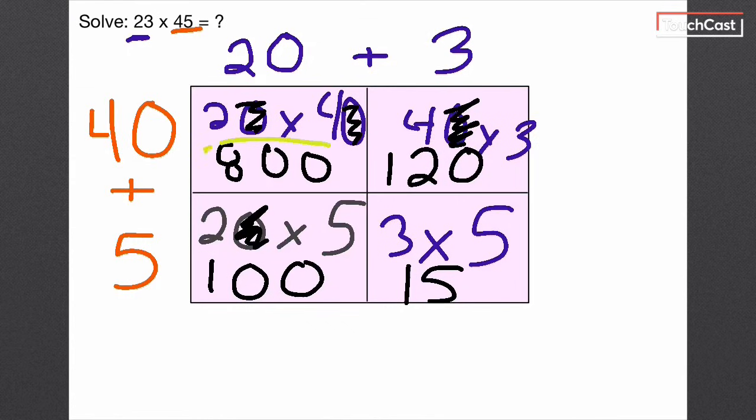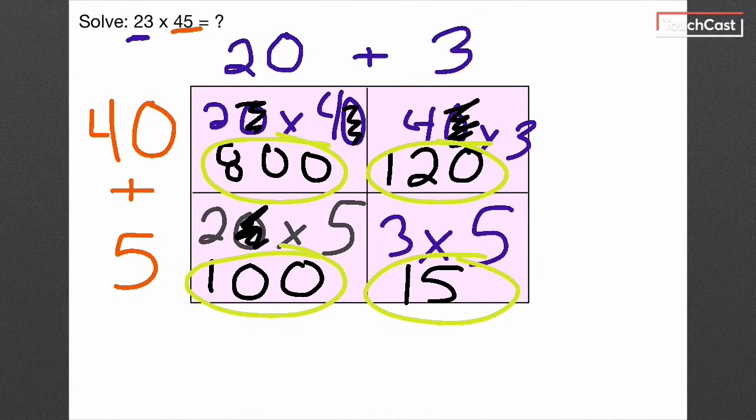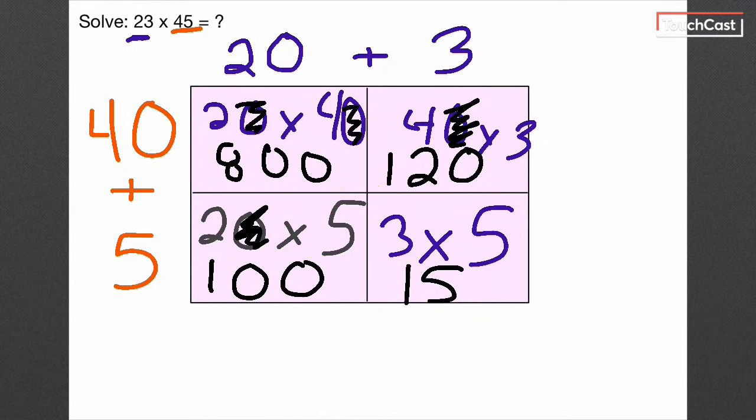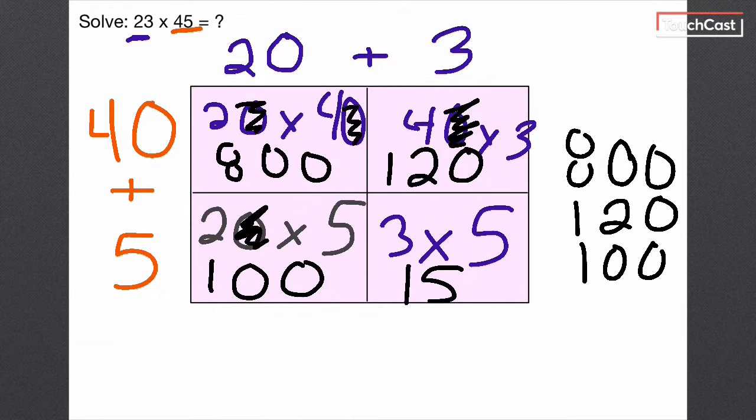Now, the only difference from before is we have to add all 4 of these up. So in this case, I've got my 800. I've got my 120. I've got my 100. And I've got my 15.